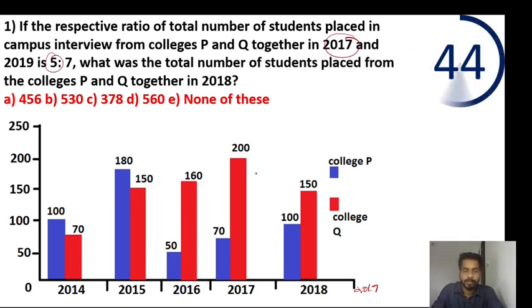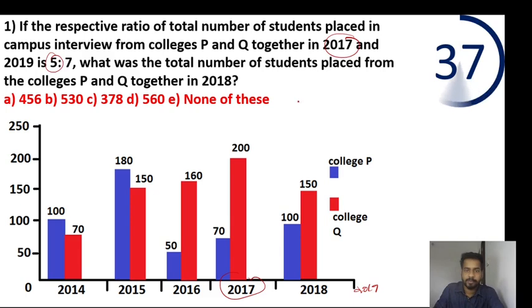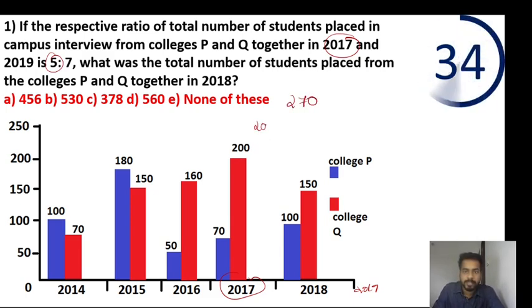P and Q is equal. P and Q is equal to 270 — that is 200 plus 70 equals 270. So P and Q combined equals 270.